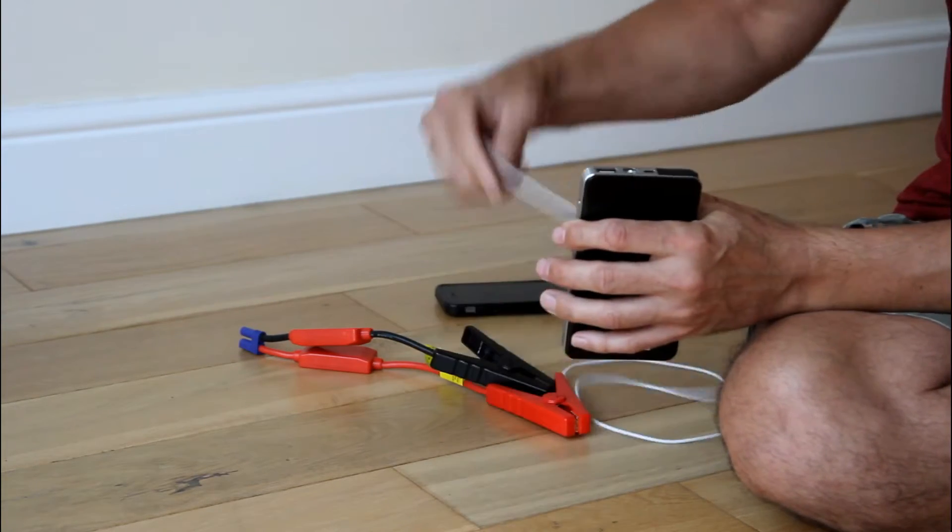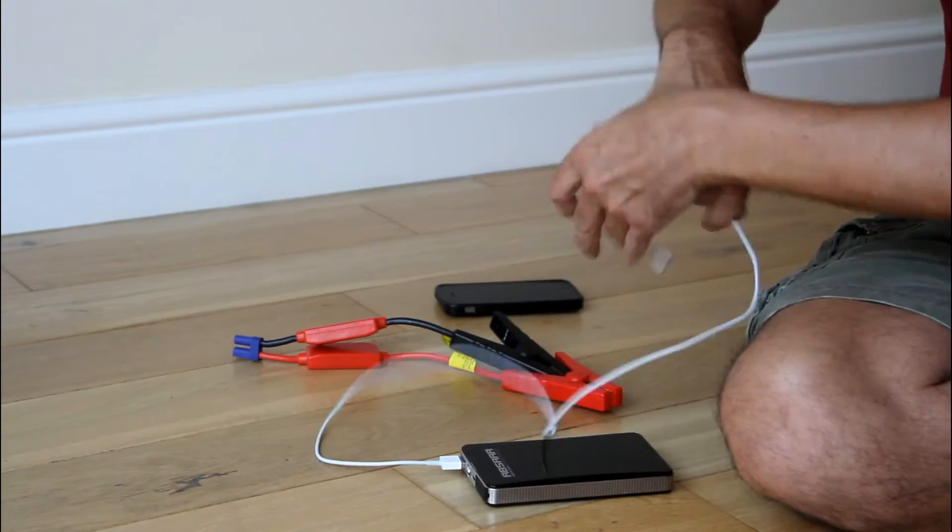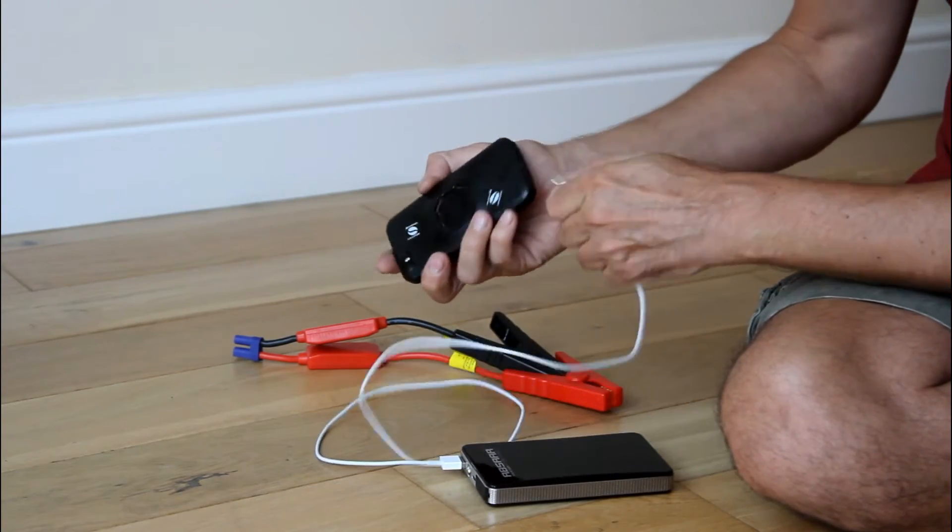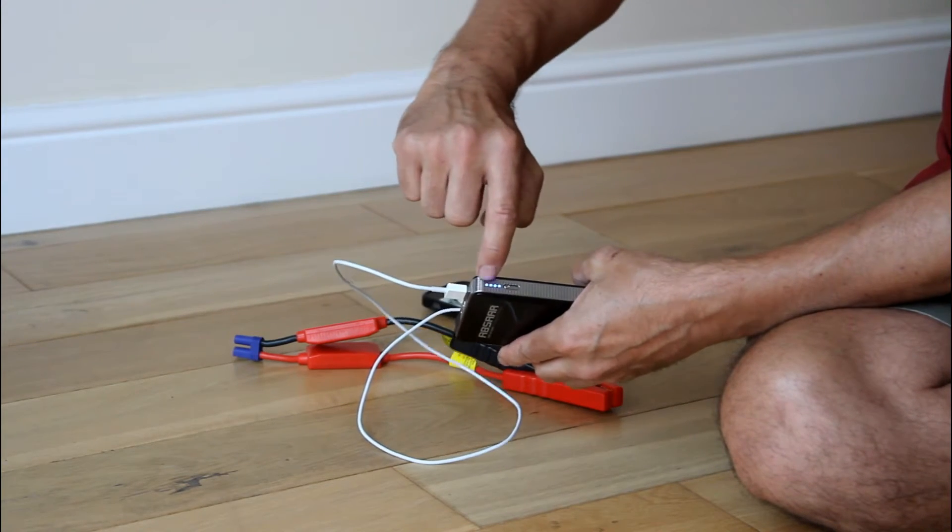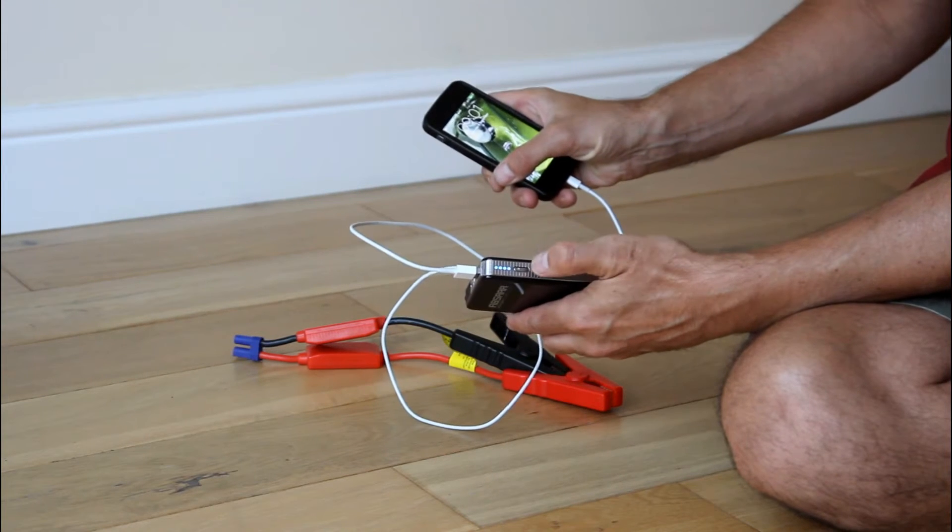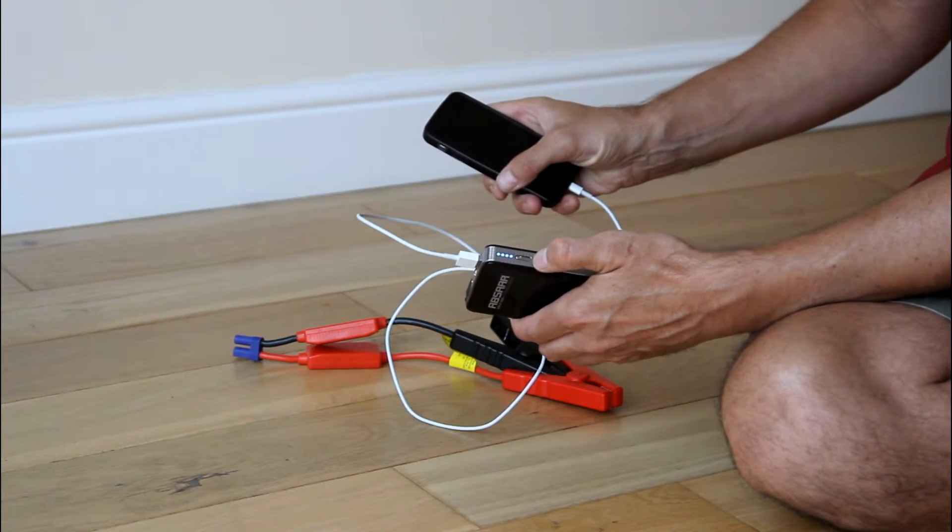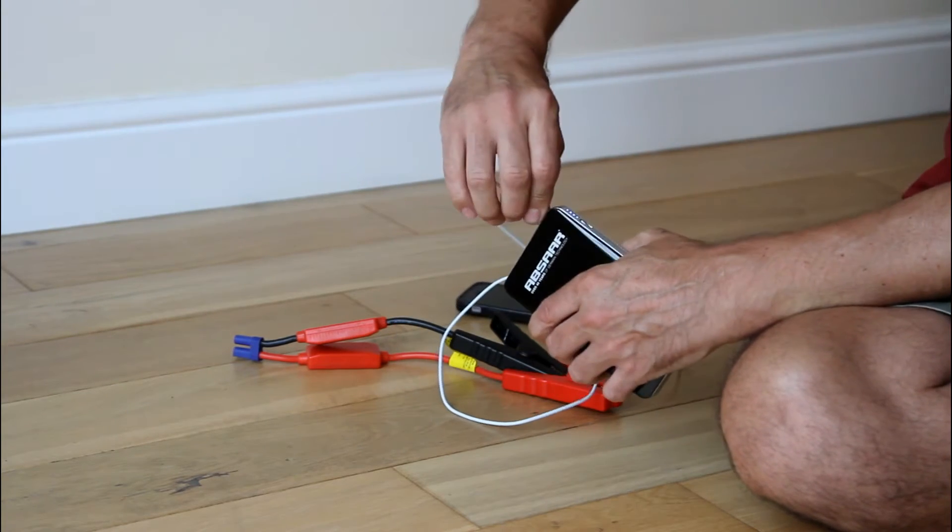For starters it's got a USB point so you can just plug your phone in, charge it when you're on the go. It's got four bars on there or four lights up. So it's charging my phone now. You can get about five to seven charges out of that on a phone, which is very handy.